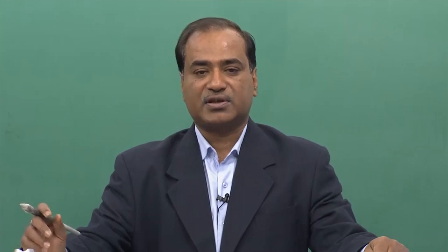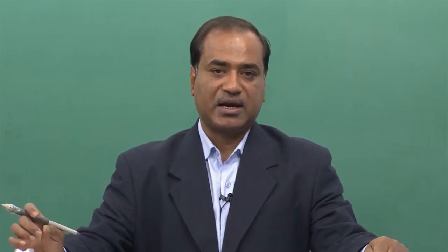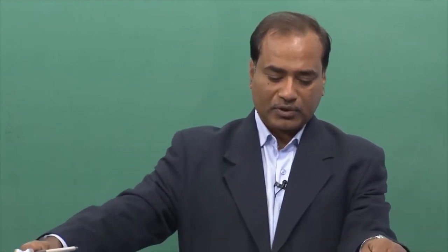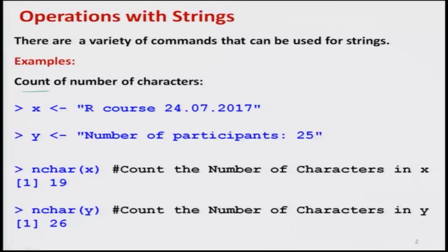Sometimes when you fill up an online form, it says you have a limit of 200 characters, and as soon as you type more than 200 characters, it will say this cannot be typed, or it will show you that 20 characters are left, 18 characters left, and so on. The command or function for counting characters in a string is NCHAR, and inside the argument you write the string of which you want to count the number of characters.